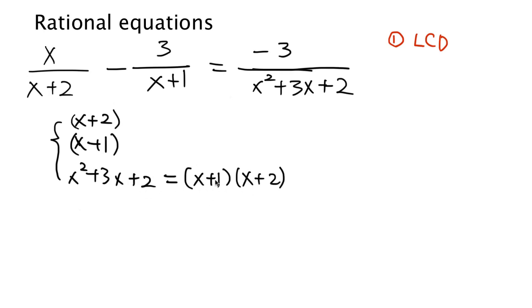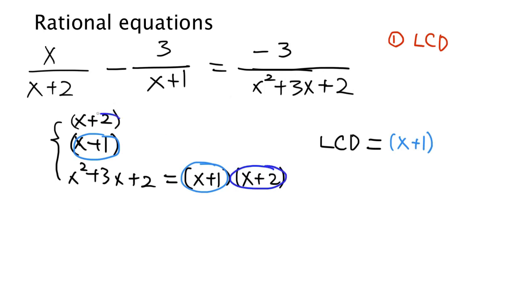Because 1 times 2 is 2 and 1 plus 2 is 3. The least common denominator is the product of all of the factors. We have x plus 1 and another x plus 1, so the highest power of x plus 1 is the first power. And we have x plus 2 and another x plus 2, so the highest power of x plus 2 is also the first power. These two factors account for everything in the denominator, so this is the least common denominator — which is the same as the third denominator x squared plus 3x plus 2.